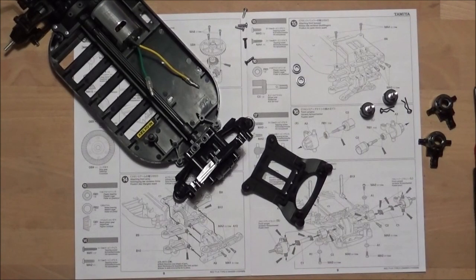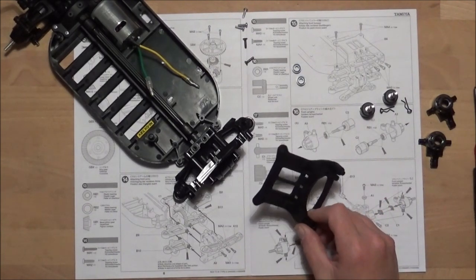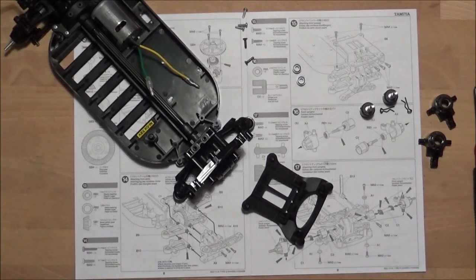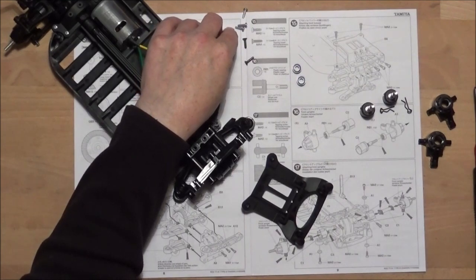Steps 15 and 16 are very similar to previous steps for the rear end. Step 15 is adding the front bumper and 16 is making up the front wheel axles. For 15 you're going to need three ME3s 3x10mm tapping screws.